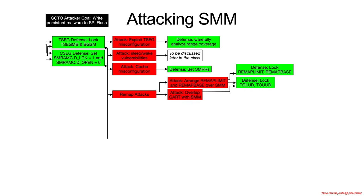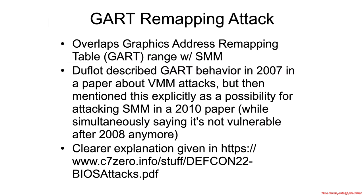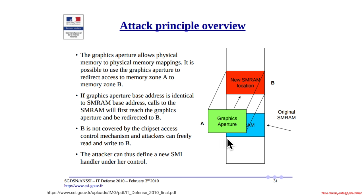The next attack is overlapping the GART — graphics aperture remap table — with SMM. DeFlo in 2007 described the GART in the context of virtualization attacks, and then in 2010 mentioned it specifically in the context of attacking SMM, while noting that the GART has gone away from newer hardware. The basic idea is that there's a graphics aperture, and if you overlap it with SMRAM, calls to SMRAM will first reach the graphics aperture and be redirected — so an attacker could put code there and redirect execution away from the real SMM code.